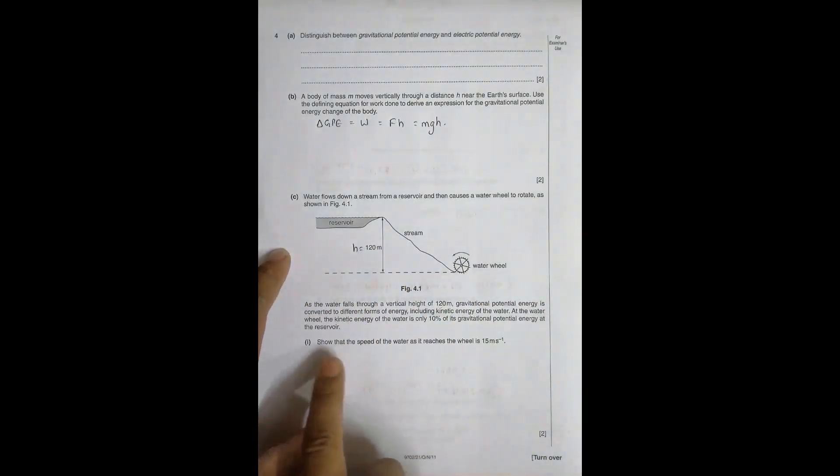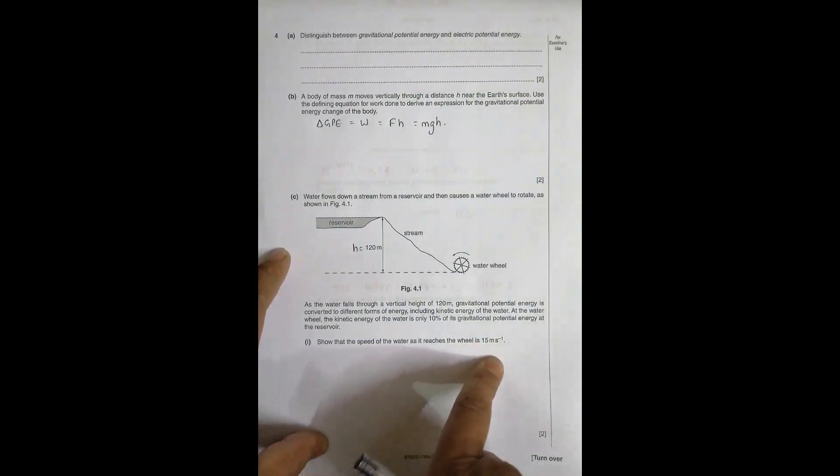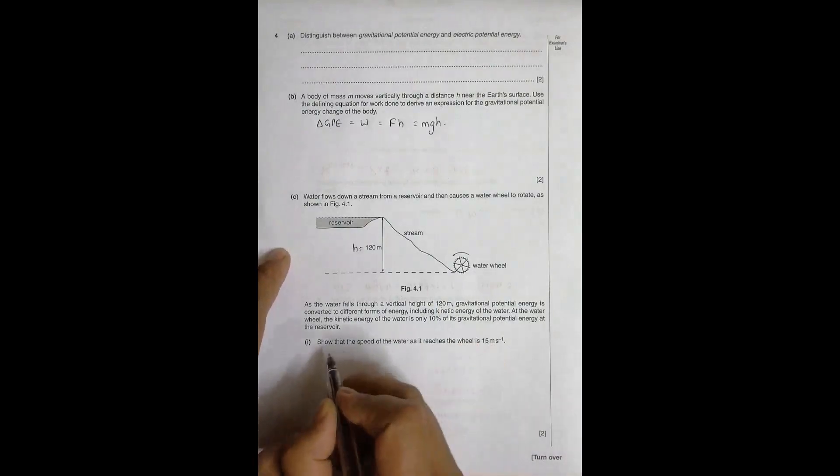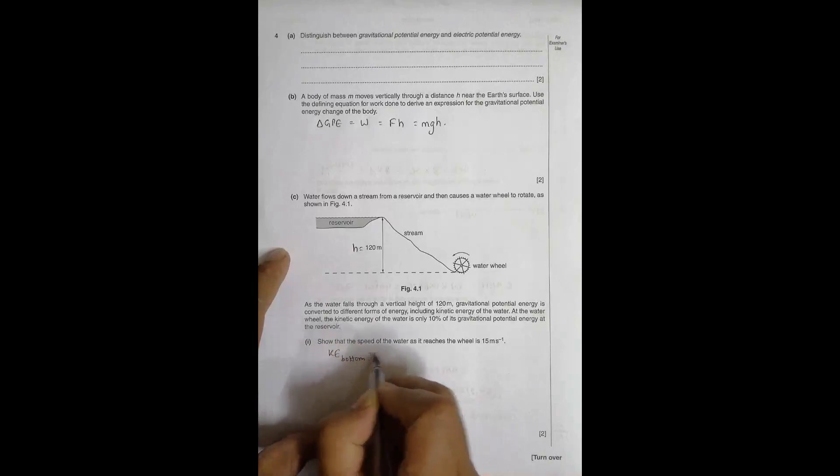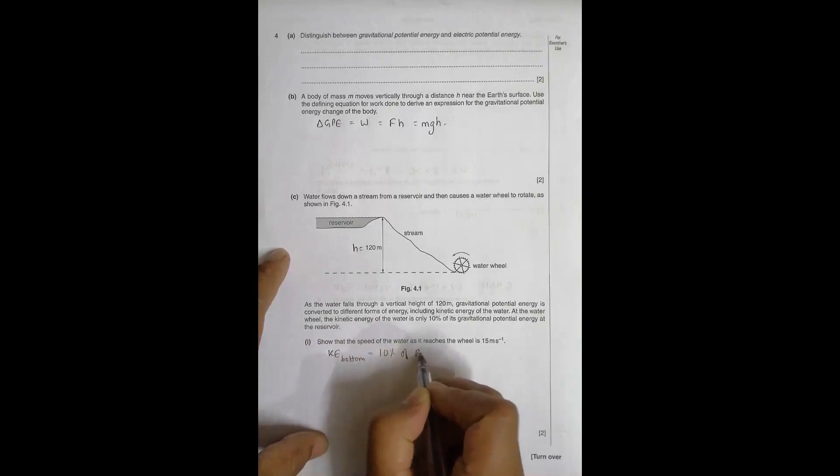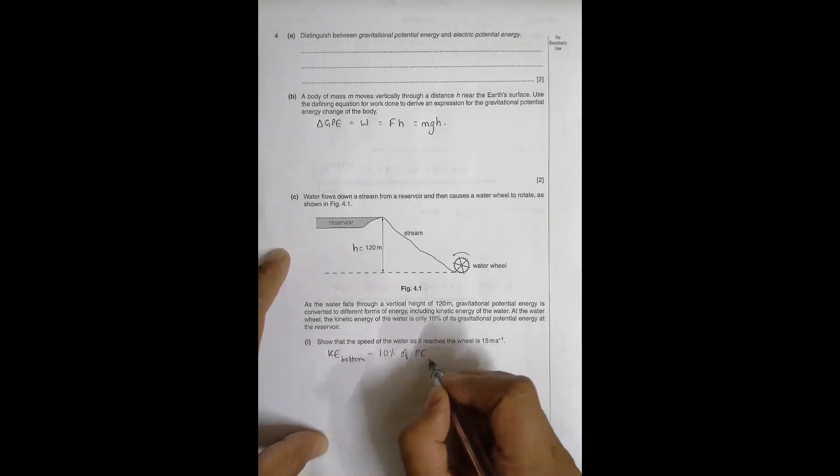So with that data, we have to show that the speed of the water as it reaches the wheel is 15 meters per second. So what we have, we're having is the KE here, KE at the bottom is equal to 10% of PE at the top, PE at the top, simply I can write PE top.